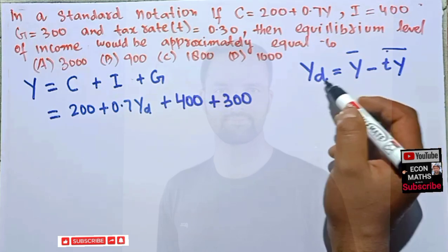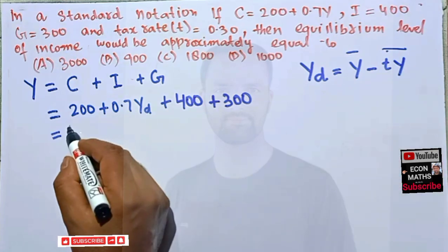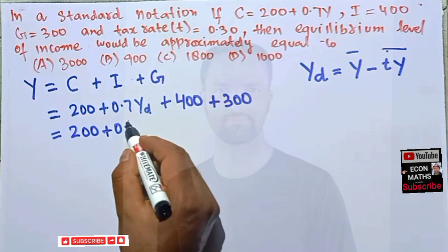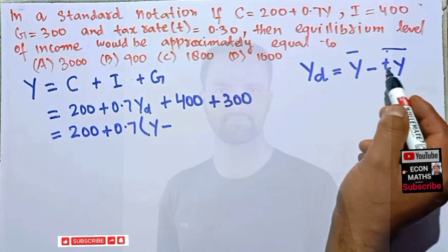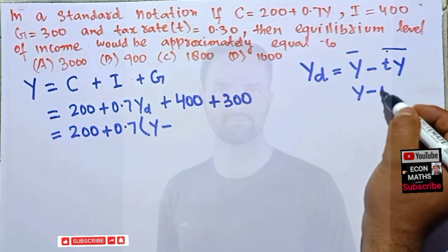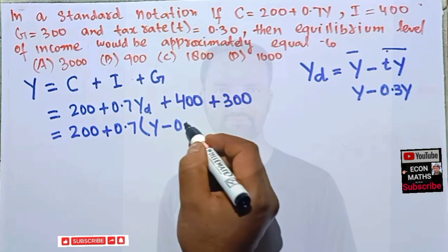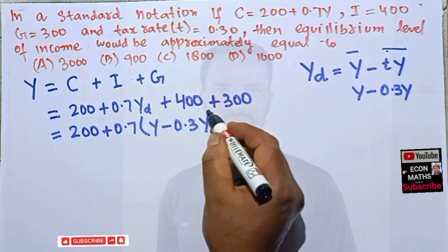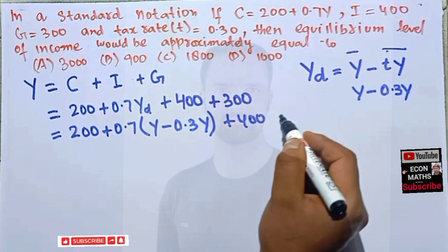So here we have in place of this Y subscript d we can write Y minus tY. So this is like this 200 plus 0.7 in place of this I can write Y minus tY. What is the value of t? So we have actually like this Y minus 0.3Y. So I will write here 0.3, this is the tax rate. After that we have this 400 and 300.